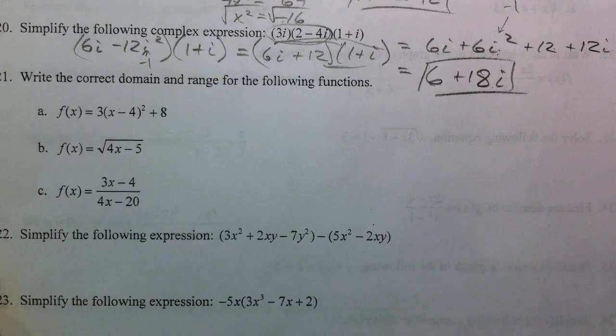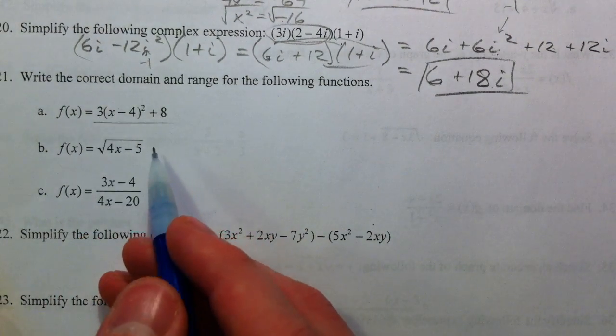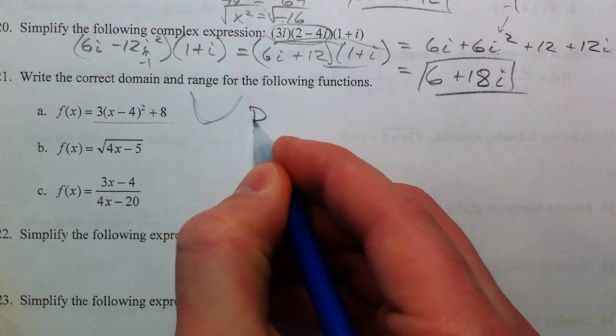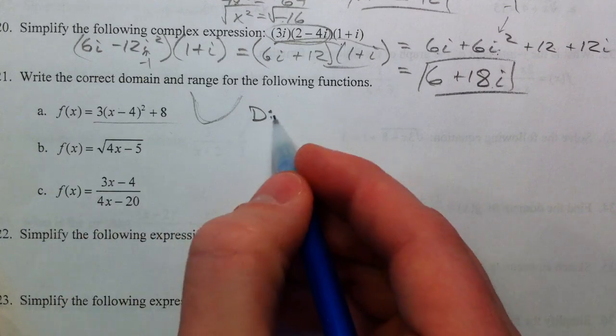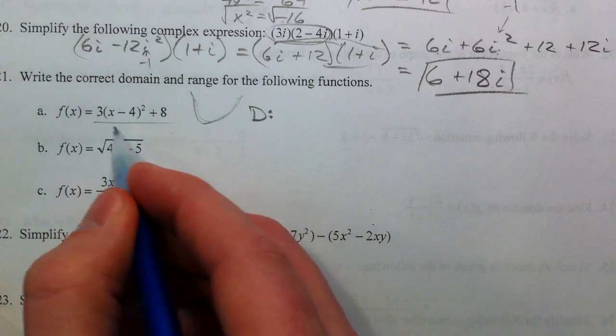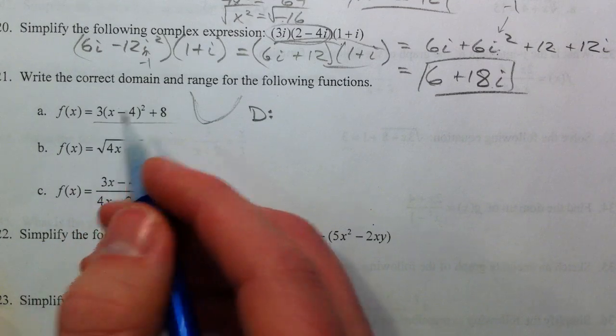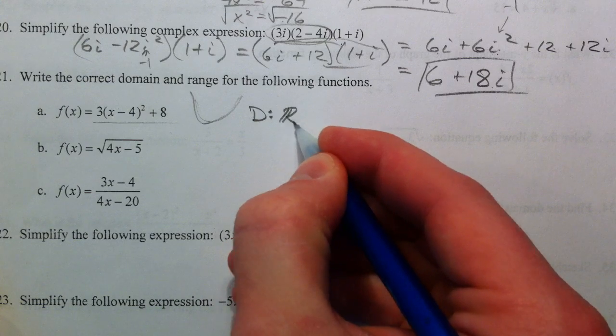Moving on to domain and range. This first one's a parabola, and so it's going to look like this because it opens up. But the domain has to do with what x values we're allowed to plug in. I can plug in any number here because I can square any number, positive, negative, 0, anything. So I'm going to say all real numbers.